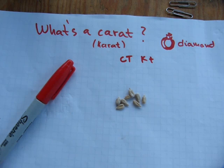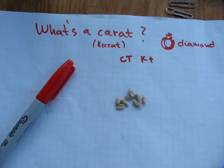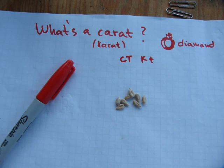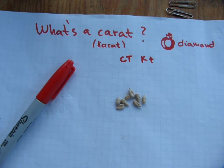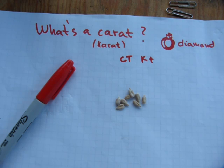A carat is a unit of measure for measuring the weight or mass of precious or semi-precious stones, typically used with diamonds. A carat is sometimes, depending on the country you're in, spelt with a C or a K and is abbreviated as CT uppercase or KT lowercase, or a combination of these.